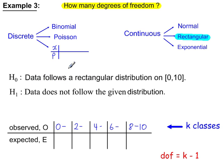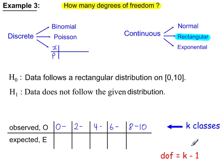Example 3: does the data follow a rectangular distribution? There are no population parameters to work with here — no N, P, lambda, mean, variance, or anything like that. So this is always k minus 1 degrees of freedom. With 5 categories, that gives 4 degrees of freedom.